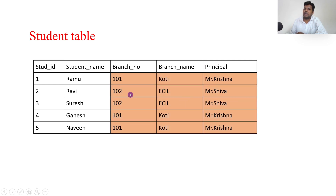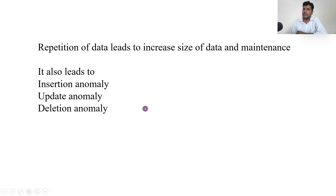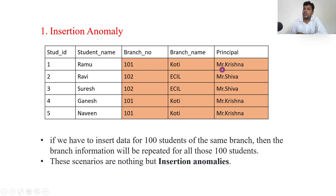This repetition of data leads to increased size and maintenance overhead. Unnecessarily repeating data leads to anomalies — insertion, update, and deletion anomalies. For insertion anomaly: if 100 students join the Koti branch, we have to enter 101, Koti, Mr. Krishna 100 times. This situation is called insertion anomaly.